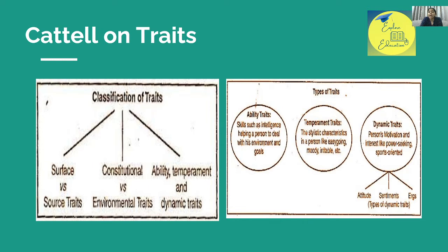What are ability traits? Ability means skills such as intelligence that help a person deal with their environment and goals. Temperament refers to stylistic characteristics of a person, like being easygoing, moody, or irritable. In dynamic traits, there is a person's motivation and interest — such as power-seeking or sports-oriented — and this also includes attitudes, sentiments, and ergs.